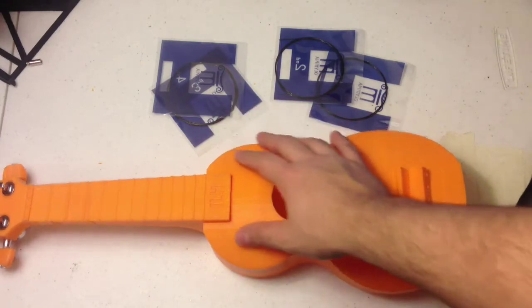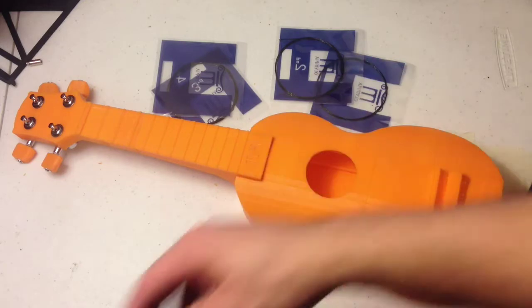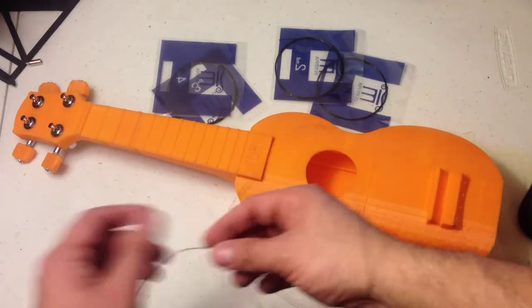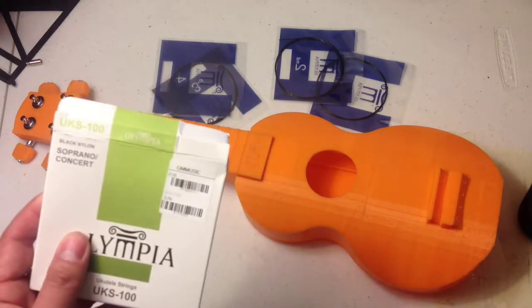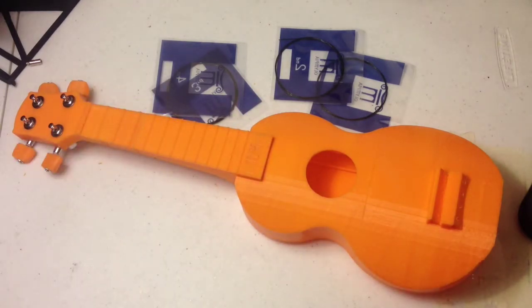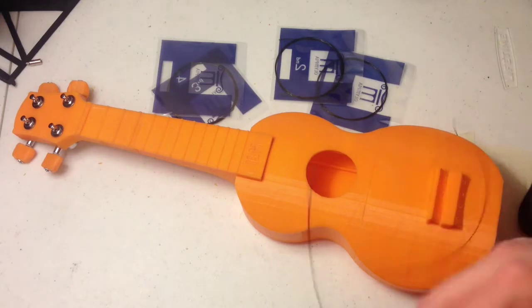Now that your tuners are installed, you're ready to start stringing the ukulele. The strings you're going to use - this is a soprano ukulele, so a lot of times it'll say soprano concert on the strings, and the tuning ends up being A-E-C-G. So you're going to use those to help you find your strings.